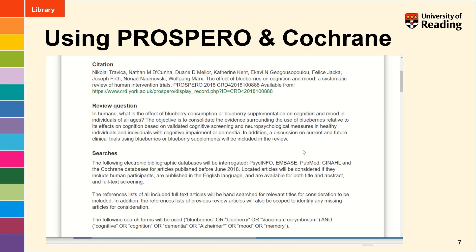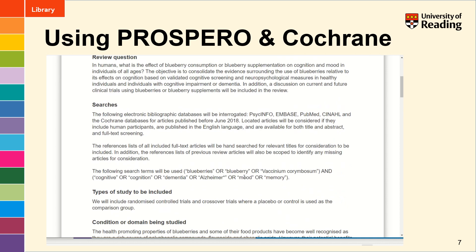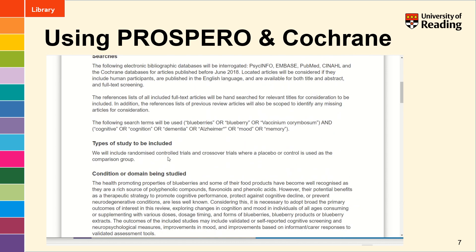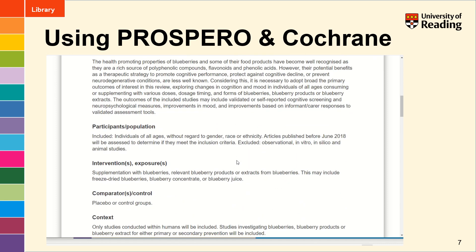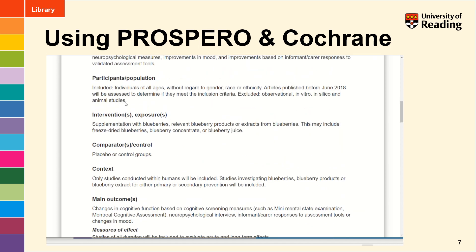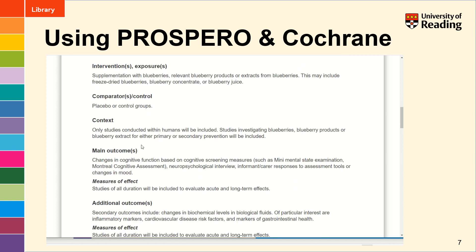So the review question, which databases you're planning to search and your basic keywords, types of study to be included, what sort of condition is being studied, types of study, the intervention planned, the comparator — so is there a control group — and the outcome. So this is where PICO comes in: your participants, the interventions, the comparator, and the outcomes. Use Prospero to find examples of protocols that are being used to plan systematic reviews.